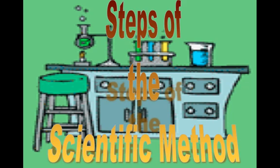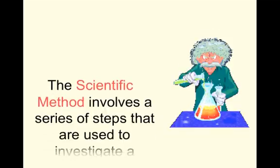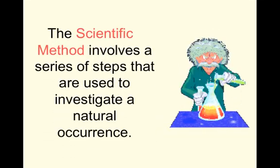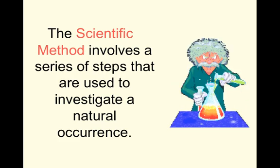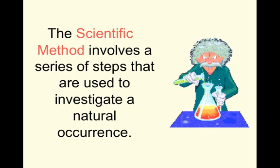Hi kids and welcome to the screencast that is going to run you through a review of the steps of the scientific method. I have the feeling you've done this before so this is just going to be a review. The scientific method involves a series of steps that are used to investigate a natural occurrence. Since science is a way of knowing things we have to make sure that what we know is based on fact.